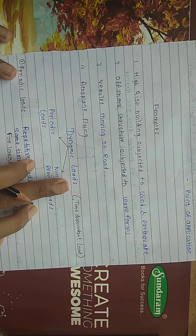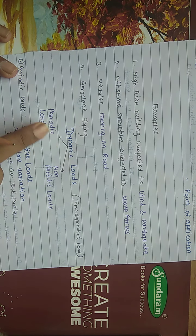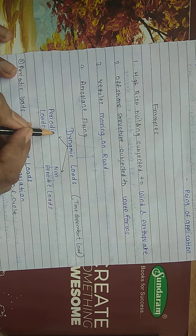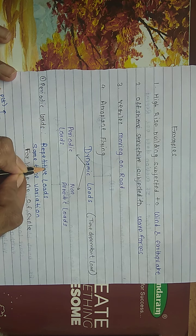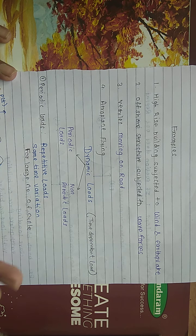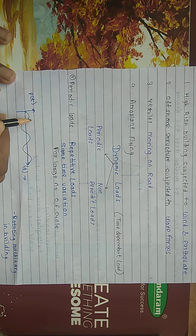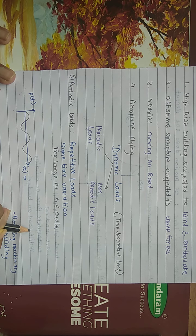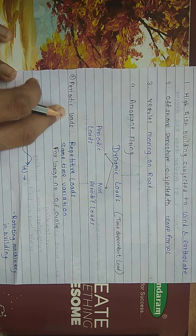Dynamic load is a time-dependent load. There are two types: periodic load and non-periodic load. Periodic load is a repetitive load with the same time variation over a large number of cycles — as you can see in the figure, it is repetitive with consistent cycles.